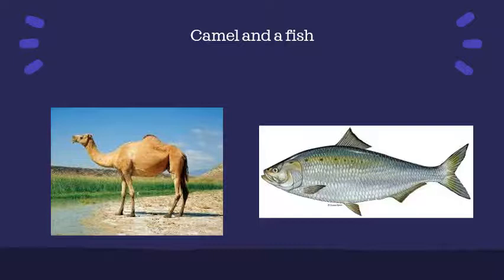Let us look at two different organisms from the desert and the sea — a camel and a fish. The body structure of a camel helps it to survive in desert conditions. Camels have long legs which help keep their body away from the heat of the sand. They excrete small amounts of urine, their dung is dry, and they do not sweat. Since camels lose very little water from their body, they can live for many days without water. Let us look at different kinds of fishes shown in figure 9.3 on page number 81.